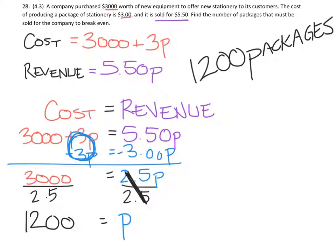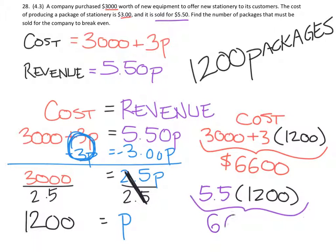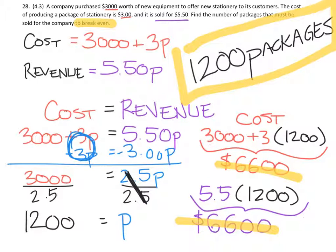So we could double-check this. We could go back to our two equations and see what is the cost for 1,200 packages. And if you did this problem, you'd see that the cost here for 1,200 packages is going to be $6,600. On the other hand, the revenue is going to be $5.50 for 1,200 packages, and this should equal $6,600 as well. Let's find out. And sure enough, if you do this on a calculator or whatever method you want to use, you should find that this is also $6,600. So we can see quickly that this $6,600 revenue is the same as the cost, $6,600, which means that we broke even. And that gives us, that just proves that 1,200 packages is the right answer.